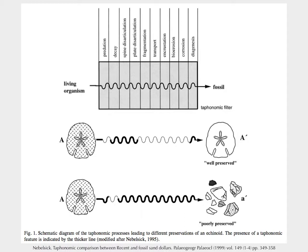Here we see two sand dollars that can become fossils. One is predated upon, decays, gets accumulated, and maybe only fossilizes as little pieces. Versus one that had no crustaceans at the surface of the water — it's going to be much better preserved.